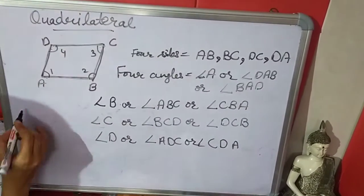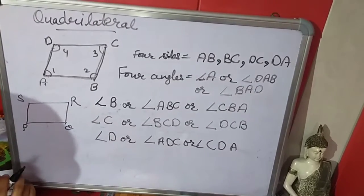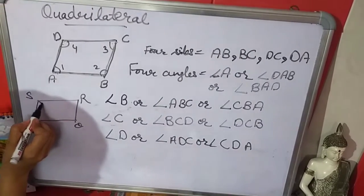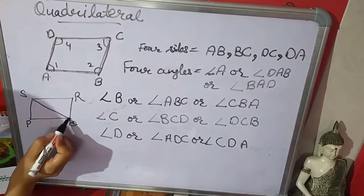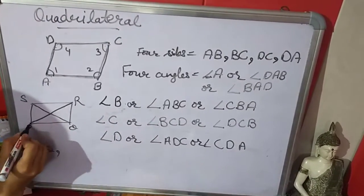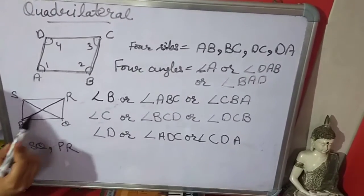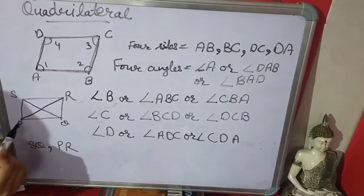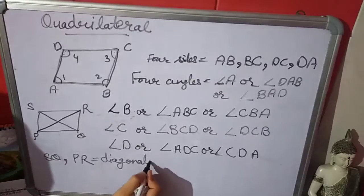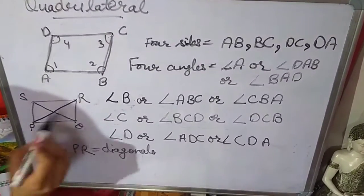Now there are 2 diagonals in a quadrilateral. If I am drawing a quadrilateral PQRS and you have to draw diagonals — diagonal means you have to connect the opposite vertices of the quadrilateral. This is the first diagonal, that is SQ. And the second diagonal is PR. When we connect opposite vertices, that line is called a diagonal.